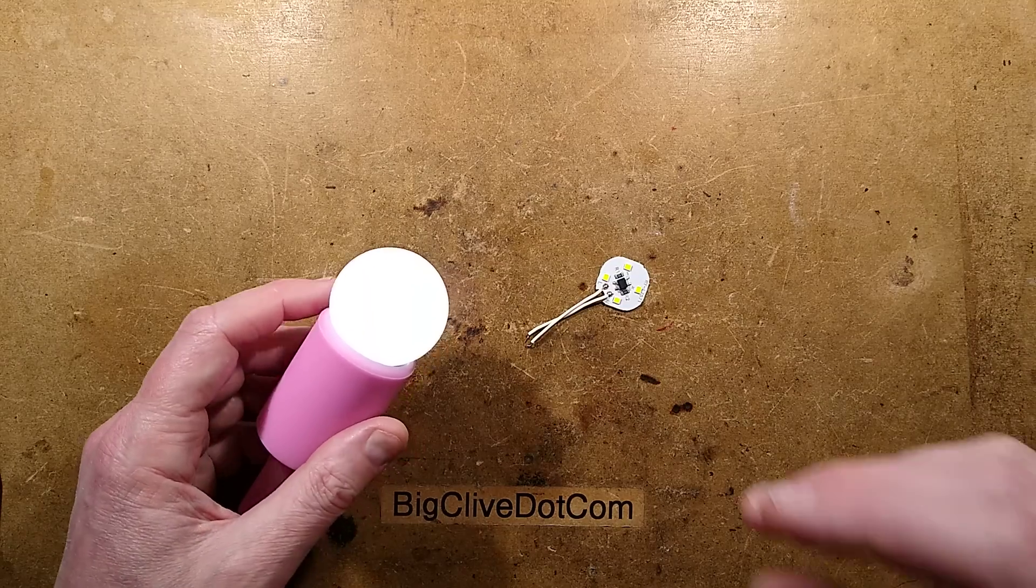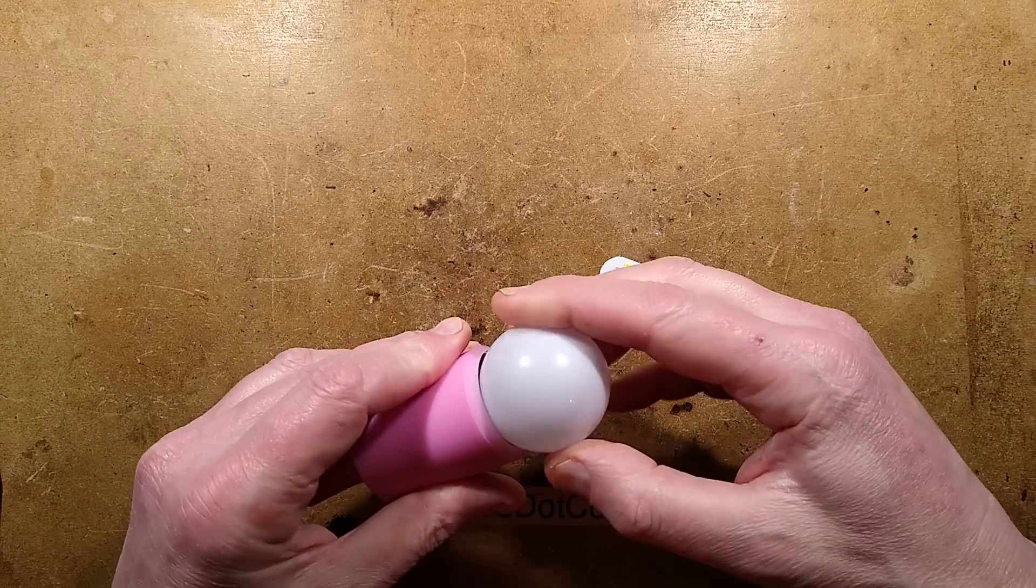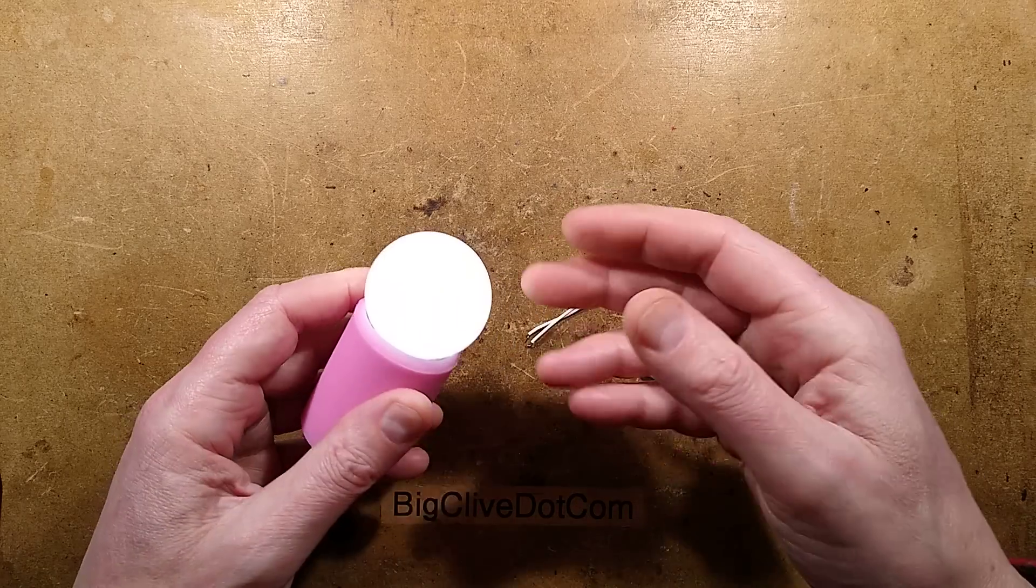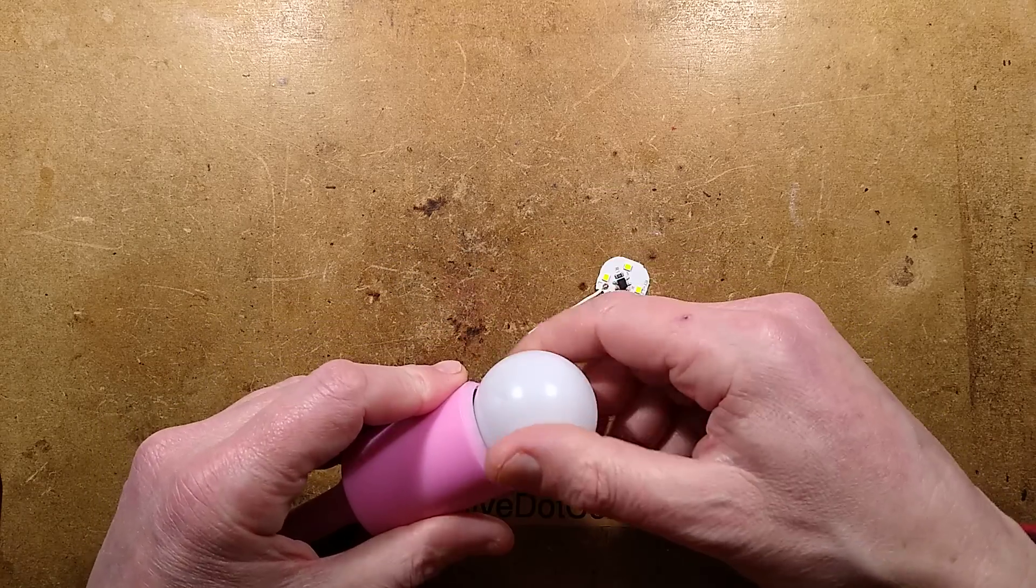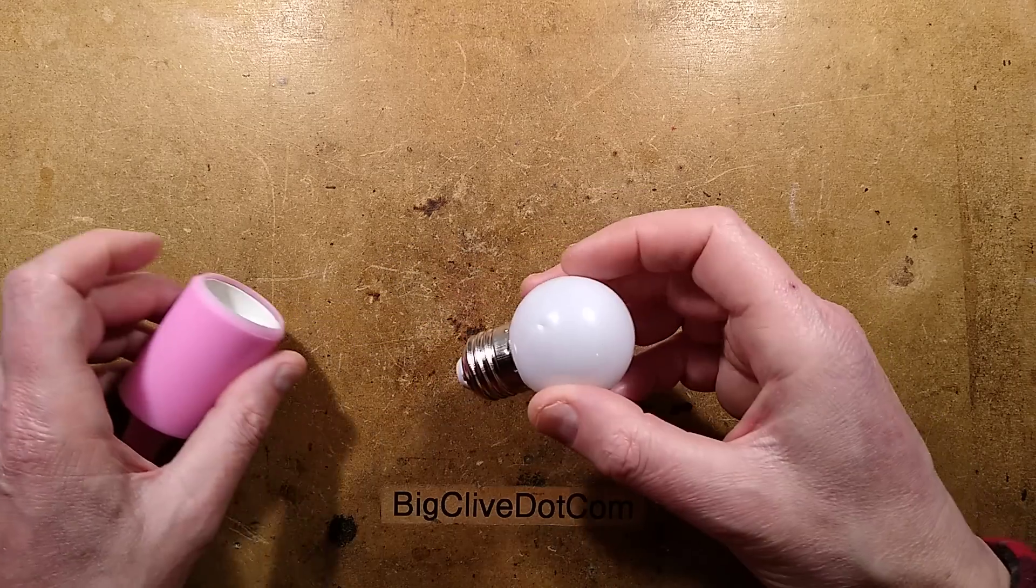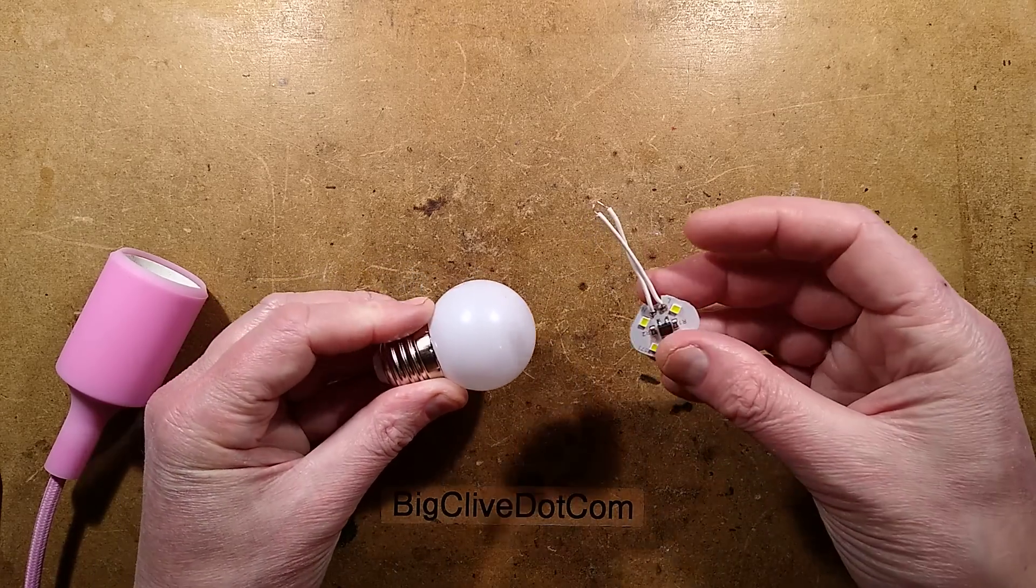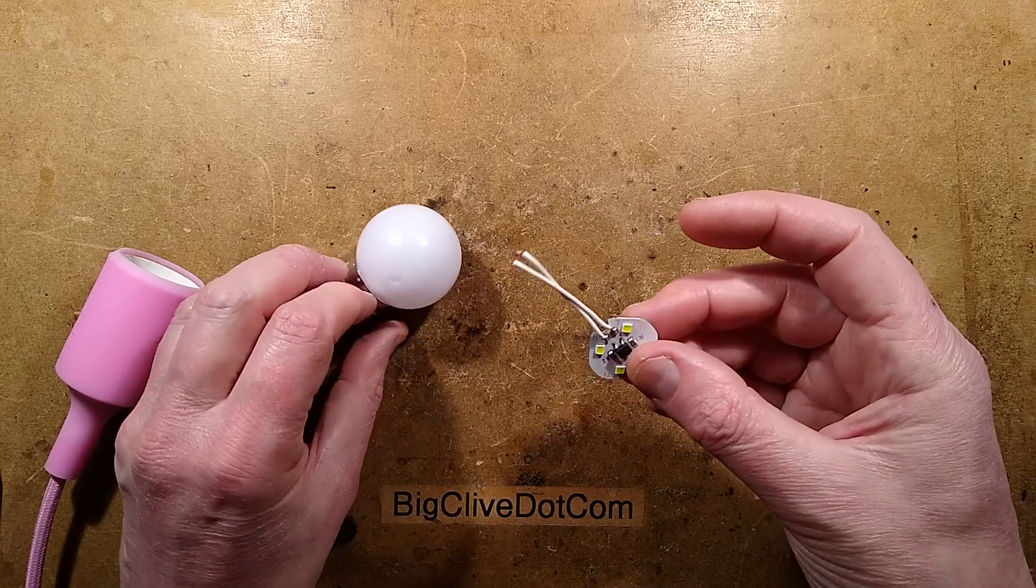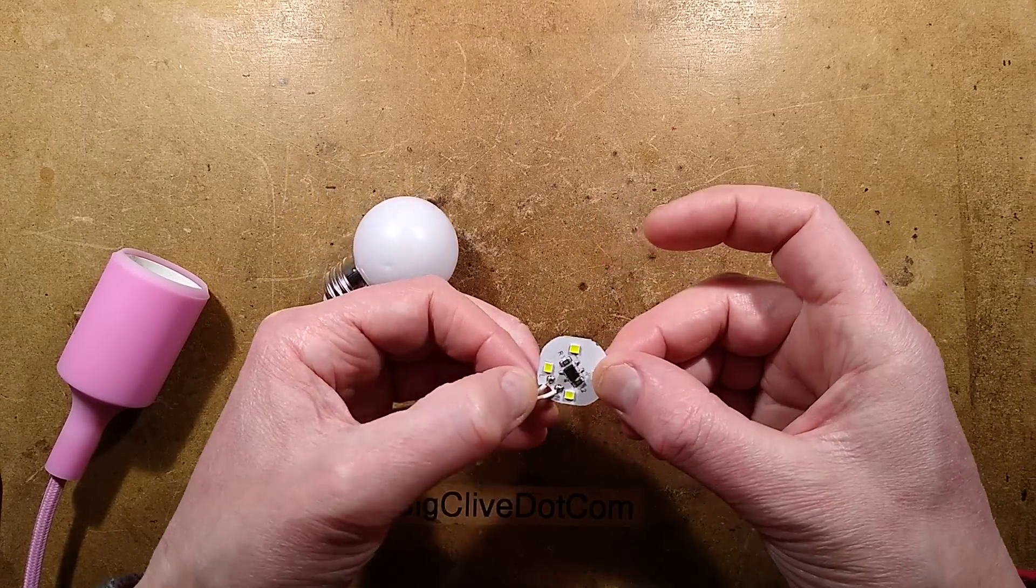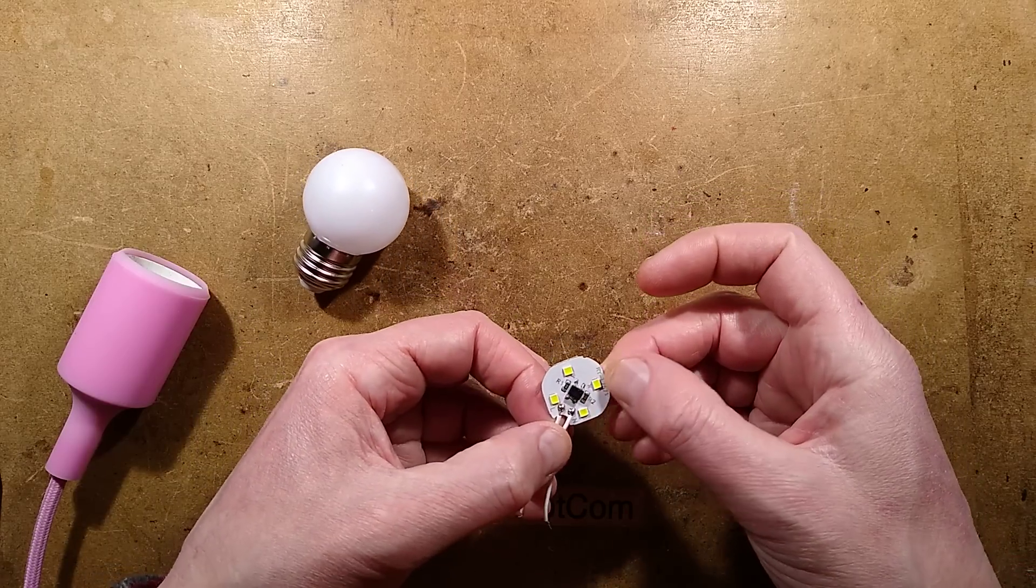A while ago I was sent a picture of the inside of one of these LED lamps. It's a typical golf ball style lamp that is used in decorative light fittings or outdoor festoons. What's interesting about it is that it's got this little circuit board inside with the absolute simplest circuit possible for an LED lamp.